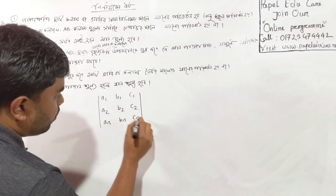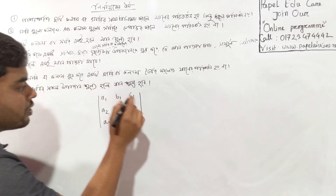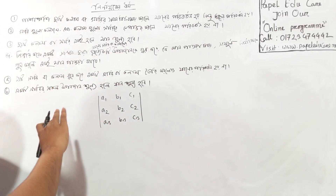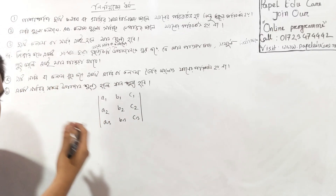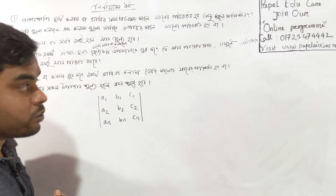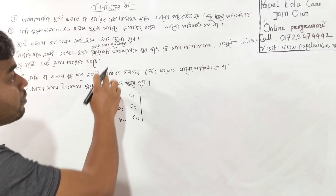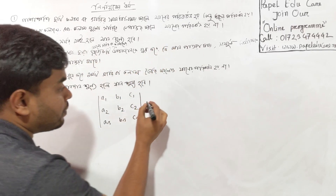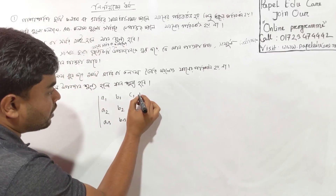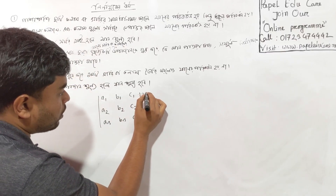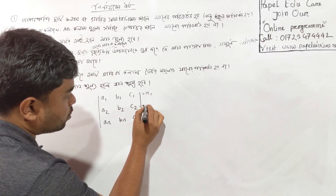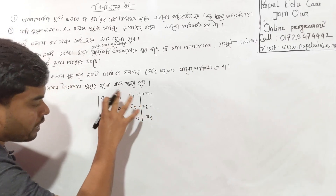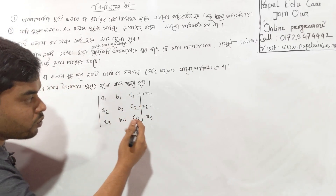A1 B1 C1, A2 B2 C2, A3 B3 C3. So, we will ask what we have done with this finite number. If we have the same column, we will ask what we have done with this finite number. We can see what we have done with this one: R1, R2, R3. So we will ask the same column, and if we convert this column...